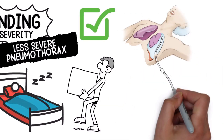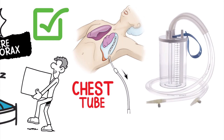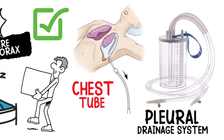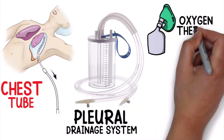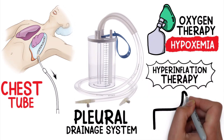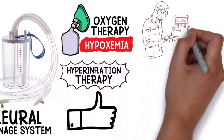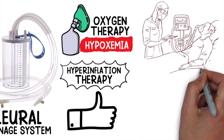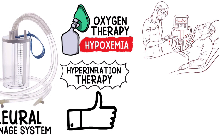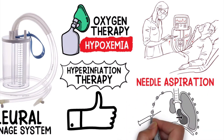However, a more severe, larger pneumothorax will require the insertion of a chest tube or pleural drainage system so that excess air leakage can be removed. Oxygen therapy would be indicated for hypoxemia, and hyperinflation therapy may be beneficial as well. In severe cases, intubation and mechanical ventilation would be indicated for acute ventilatory failure. Needle aspiration is another method for draining excess air from the pleural space that can be performed at bedside in emergency situations.